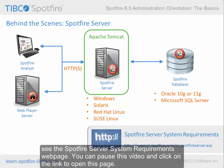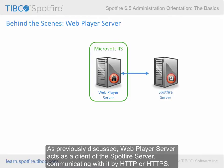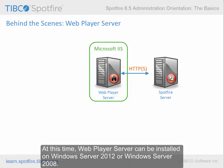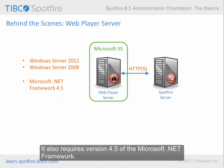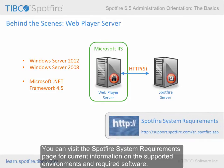You can pause this video and click on the link to open this page. Web Player server is a web application that runs under Microsoft Internet Information Services, or IIS. As previously discussed, Web Player server acts as a client of the Spotfire server, communicating with it by HTTP or HTTPS. At this time, Web Player server can be installed on Windows Server 2012 or Windows Server 2008, and it also requires version 4.5 of the Microsoft .NET framework. You can visit the Spotfire system requirements page for current information on the supported environments and required software.